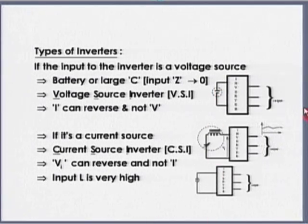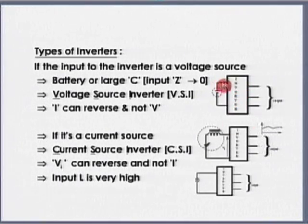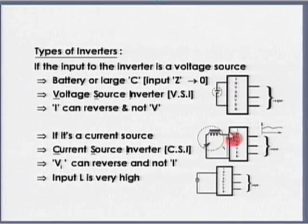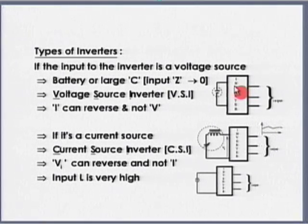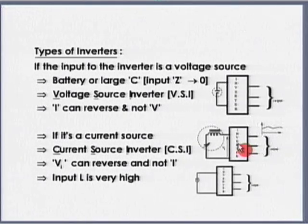The current source has certain advantages. In the voltage source inverter, current can reverse instantaneously in the capacitor, but voltage at that point cannot change. Similarly, in the current source, current cannot change instantaneously whereas voltage across the inductor can change instantaneously. So I cannot use the same type of devices in current source and voltage source — there are two different types. The switch in a voltage source should be able to carry current in both directions but need not block voltage in both directions. Whereas in a current source, it need not carry current in both directions but should be able to block voltage in both directions.